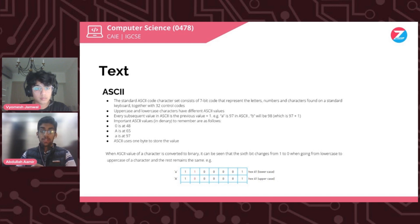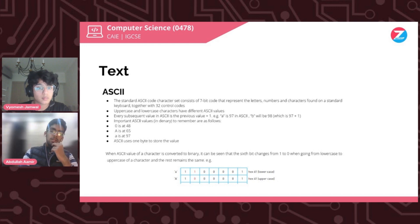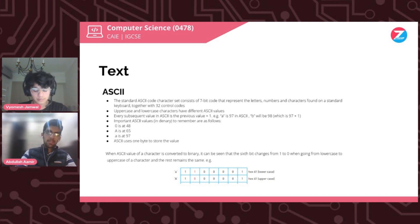When ASCII values are converted to binary, you can see that the sixth bit changes from one to zero when going from a lowercase to an uppercase character, while the rest remains the same. So you can use this method to convert between uppercase and lowercase in binary. However, if you have the option to avoid binary, just use the basic method: 0 at 48, capital A at 65, and lowercase a at 97.